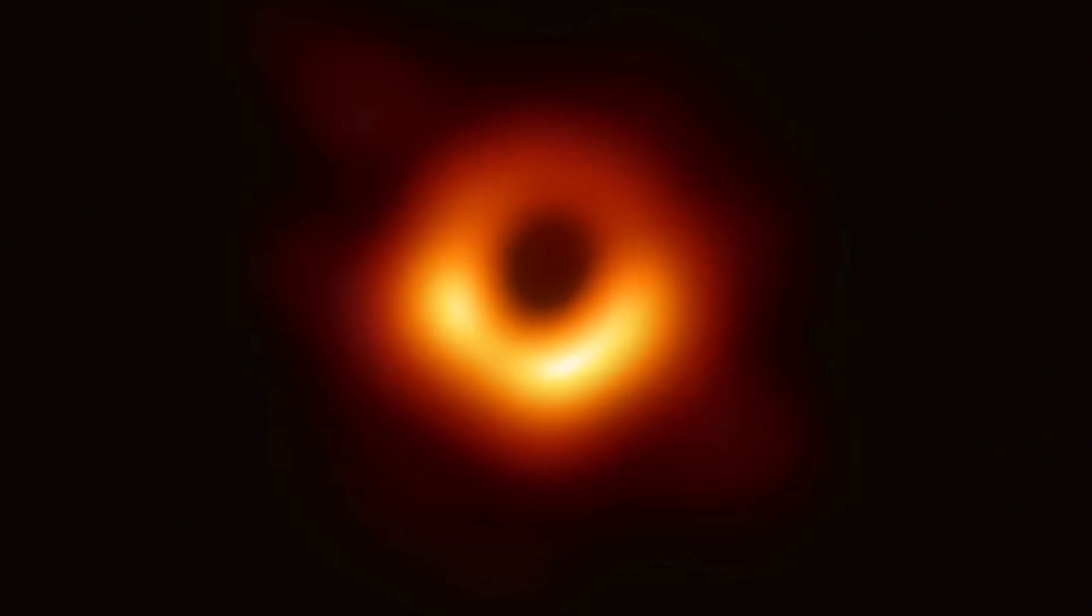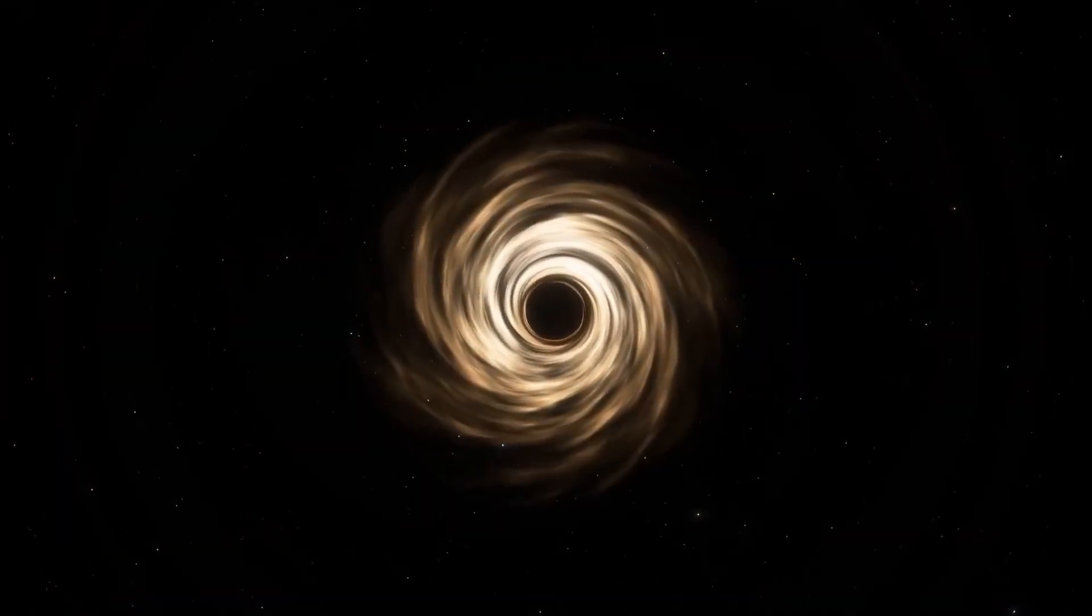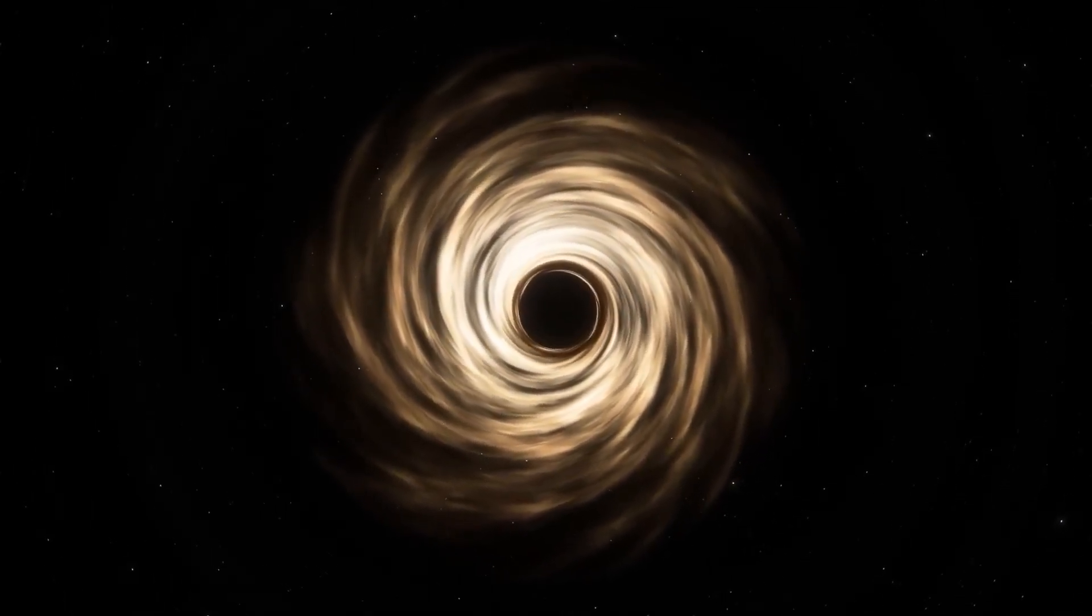Yet another theory suggests that an object falling into a black hole may be subjected to intense heating and radiation as it approaches the singularity. As matter spirals inward toward the center of the black hole, it becomes compressed and heated to extreme temperatures, emitting vast amounts of energy in the form of X-rays and other high-energy radiation.